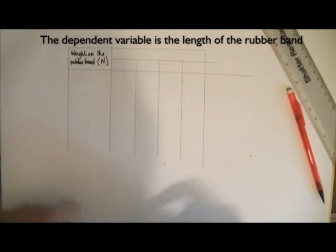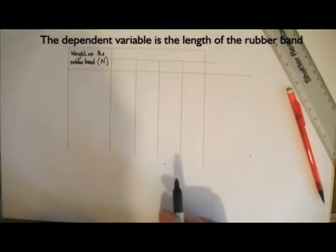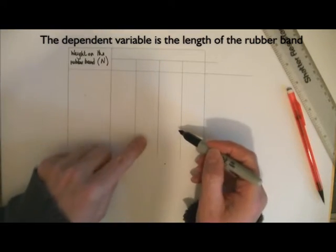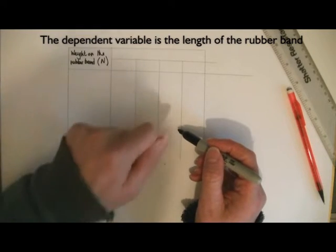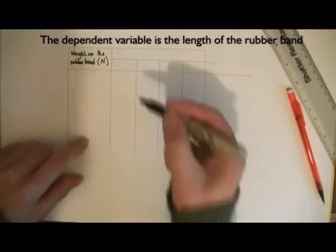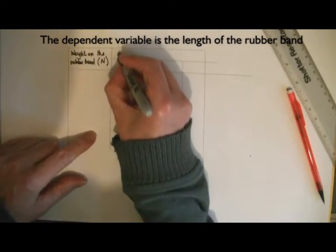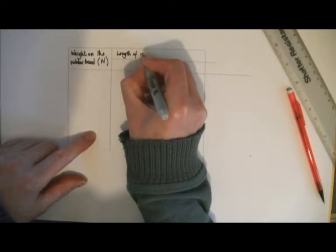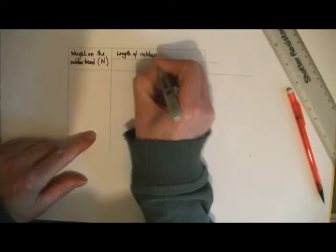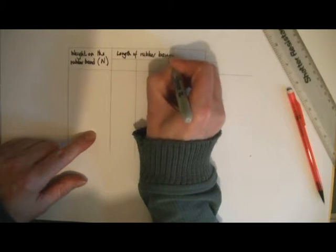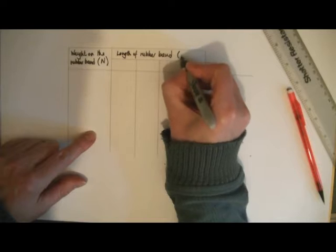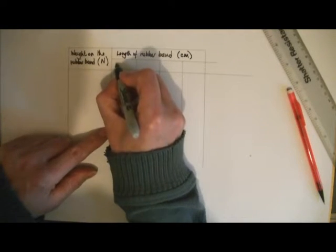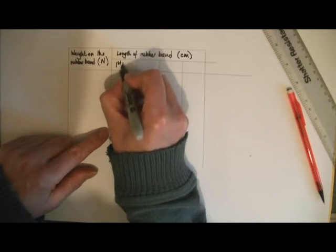Again I need to label this correctly and carefully. So, all of these columns are going to have recorded in them lengths of the rubber band. So, I can say here this is length of rubber band. And I'm going to be measuring that in centimetres. And I can say first try,